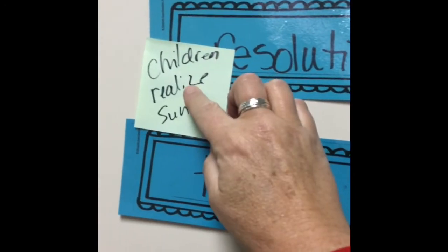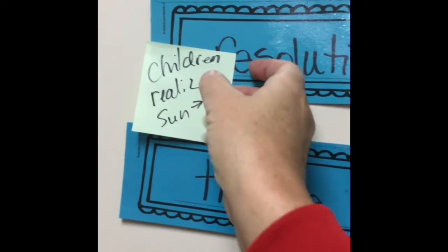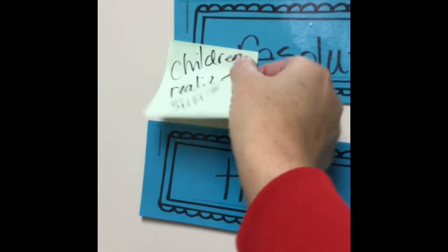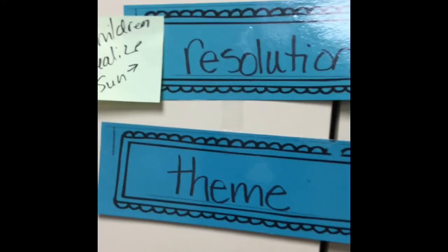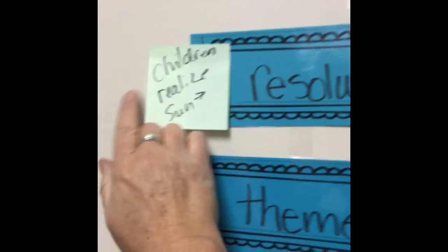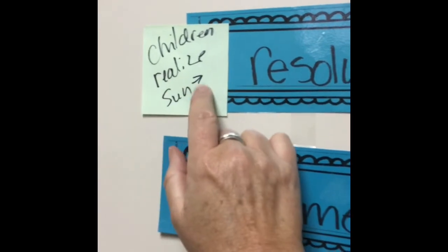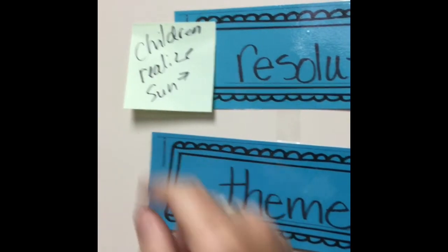We learned that the children are just like Margo in that they do remember the sun or have some knowledge of the sun. So we need the very first sentence from the story that lets us know that these kids really aren't any different from Margo because they know the sun.